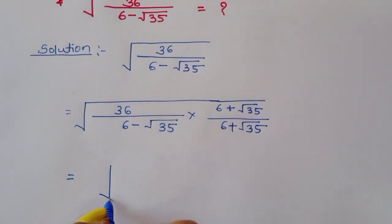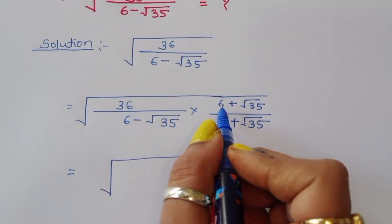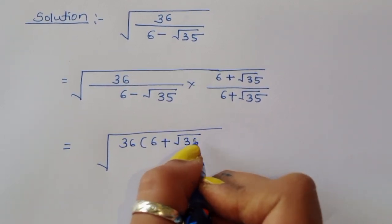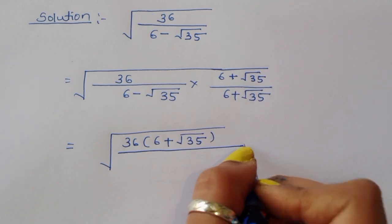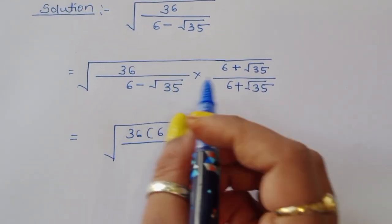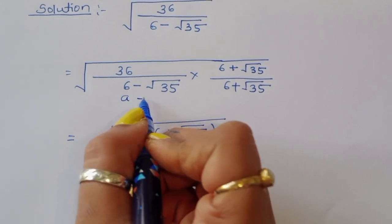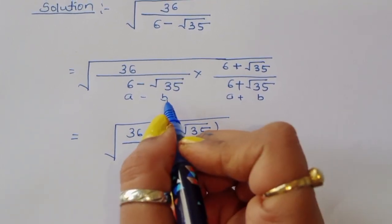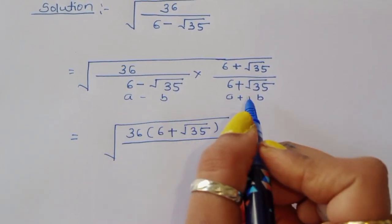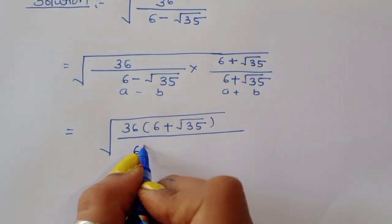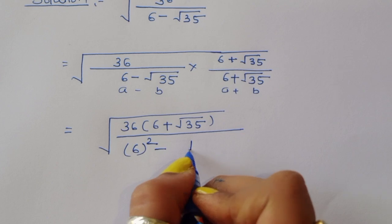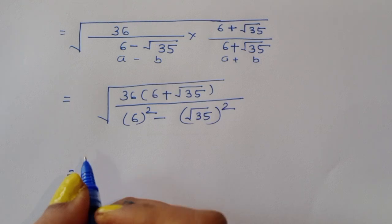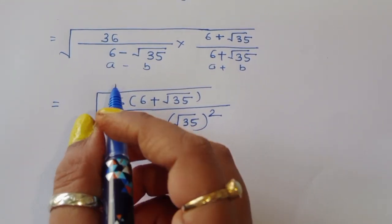This gives us 36 times (6 plus square root of 35) in the numerator, and in the denominator (6 minus square root of 35)(6 plus square root of 35). We apply the formula (a minus b)(a plus b) equals a squared minus b squared, where a is 6.